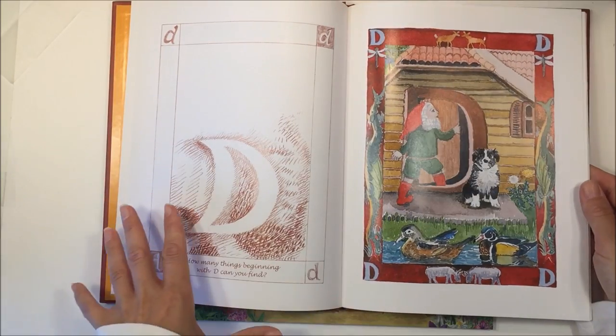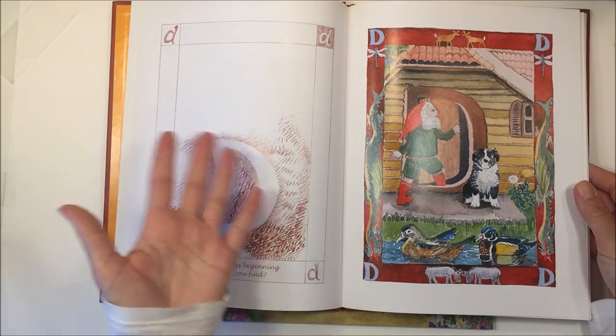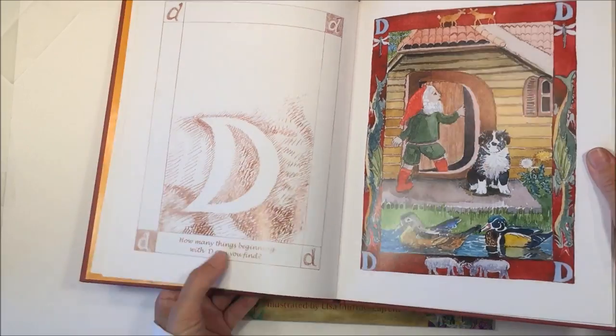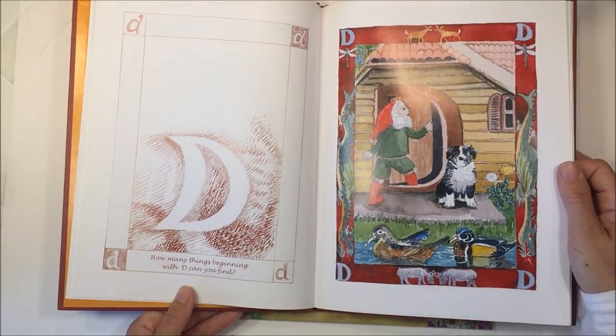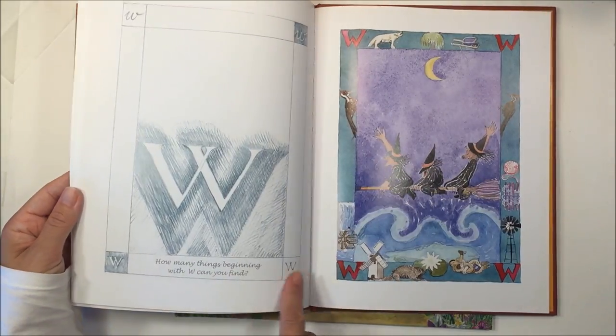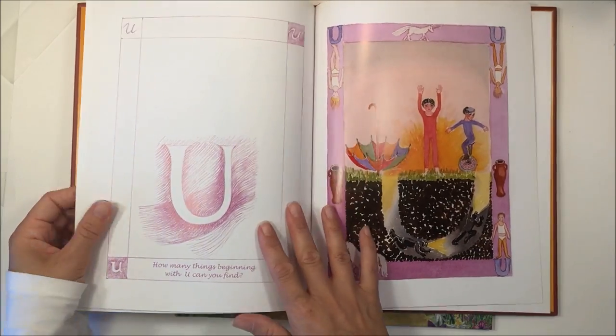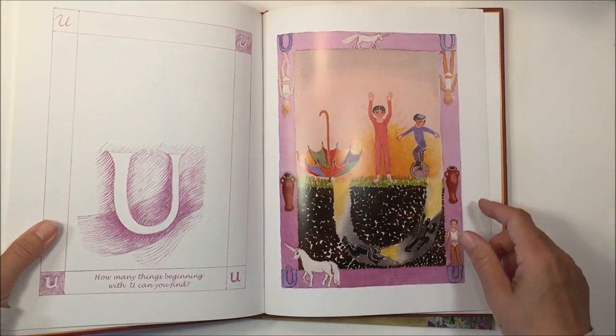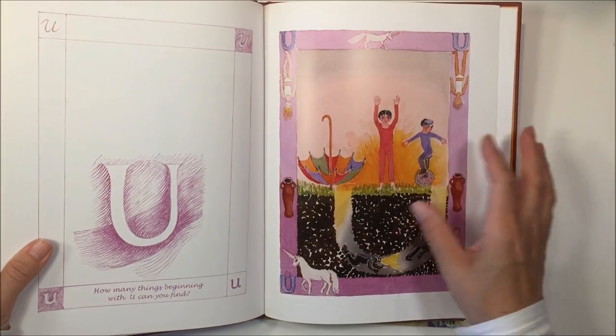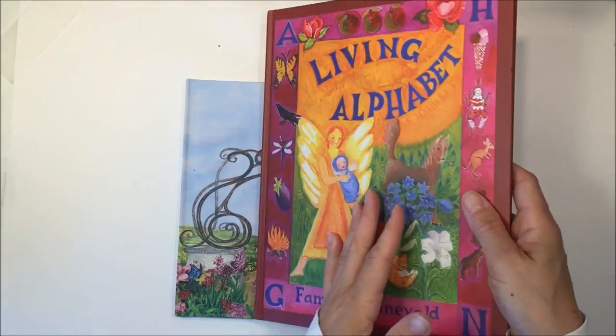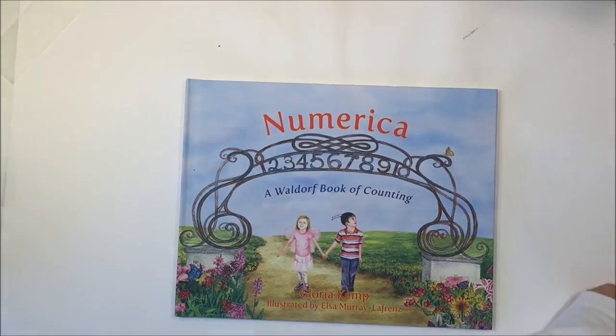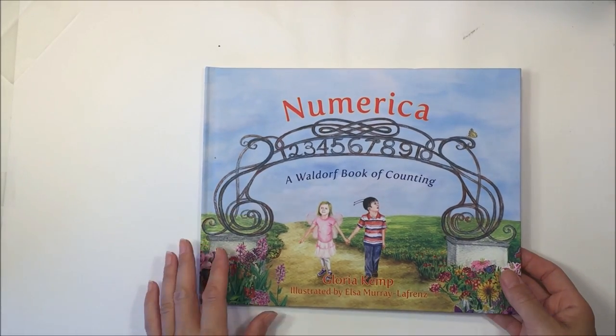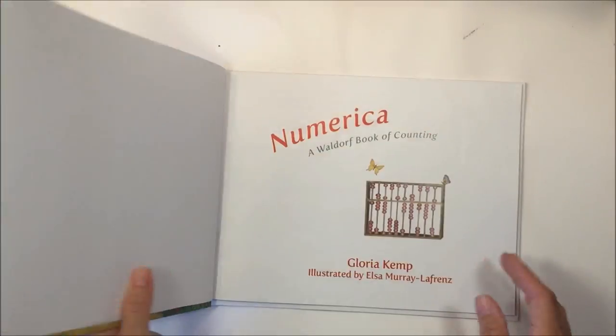It's not really a story or a narrative. It's more like how many things can you find that begin with D. And the same with every letter. So it's kind of fun for a child to search through and try to find words or the different shapes within the illustration.